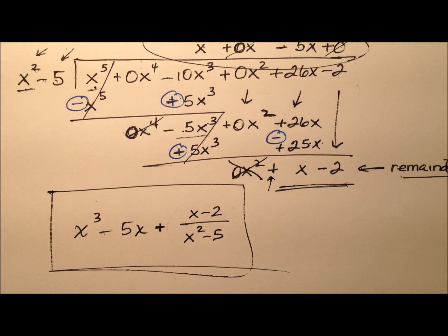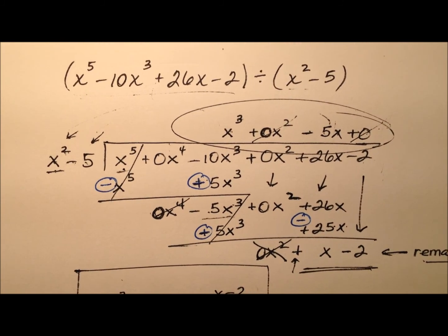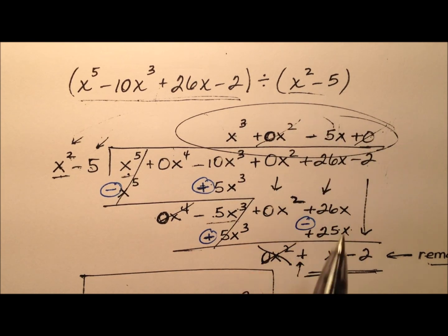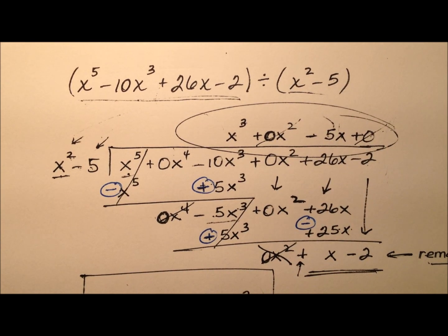So here's the final quotient what that will look like: x cubed minus 5x plus our remainder of x minus 2 over the divisor x squared minus 5. And that's what I get when I divide this quintic polynomial with four terms by this quadratic binomial.